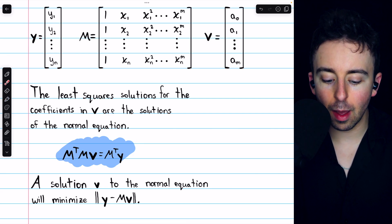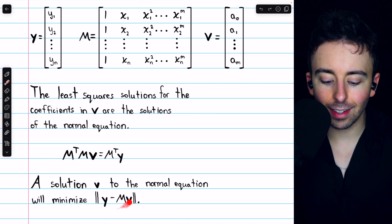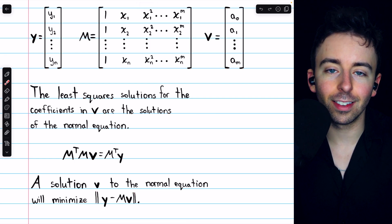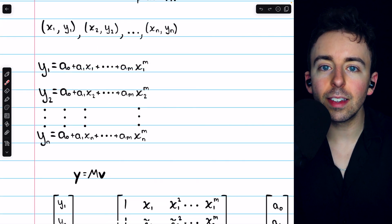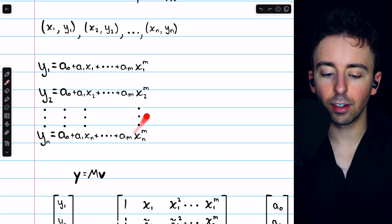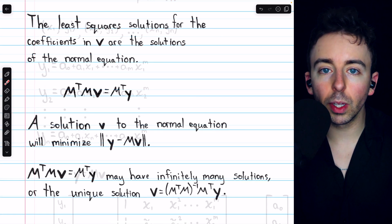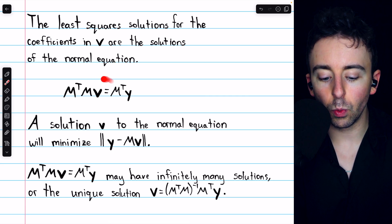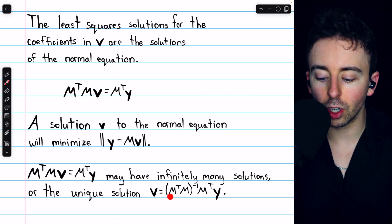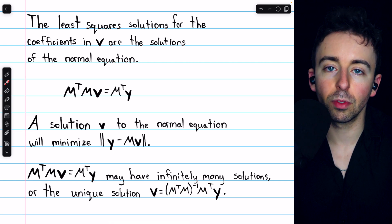M transpose times M times this vector v is equal to M transpose times y. Any solution to this normal equation will minimize the error. That is, the distance between the vector y and the vector M times v. So our least square solution probably isn't going to make this system true, but it will make the right side as close to the left side as possible. The normal equation may have infinitely many solutions, but if it has a unique solution, we solve this for v and find that the unique solution is this: M transpose M inverse times M transpose times y.